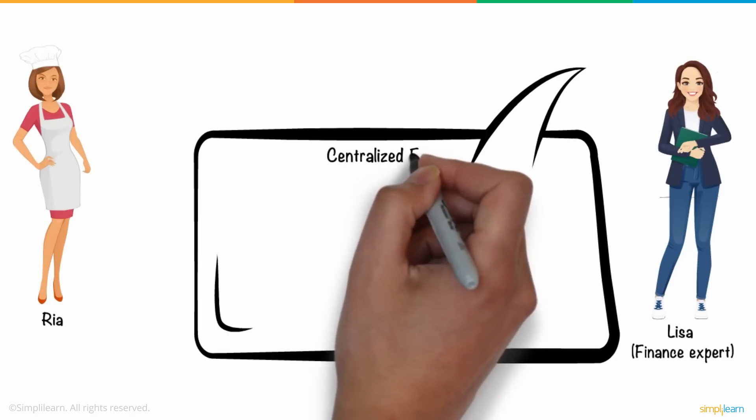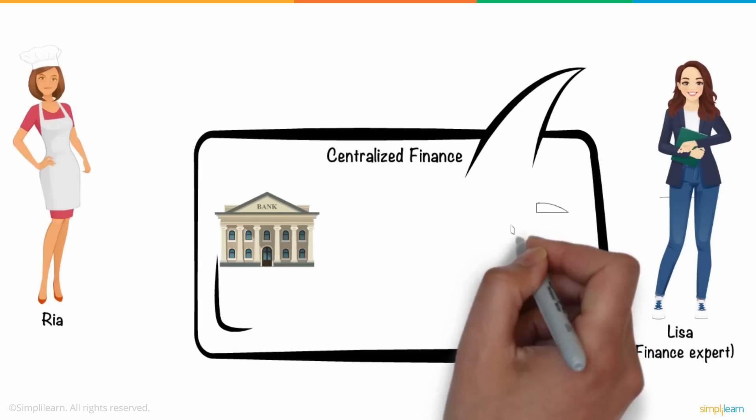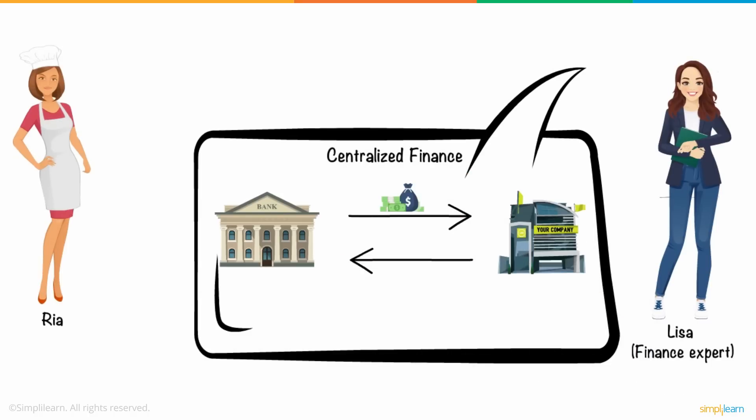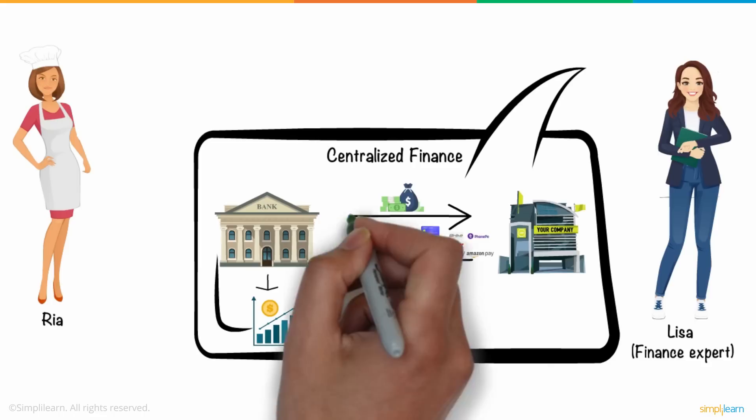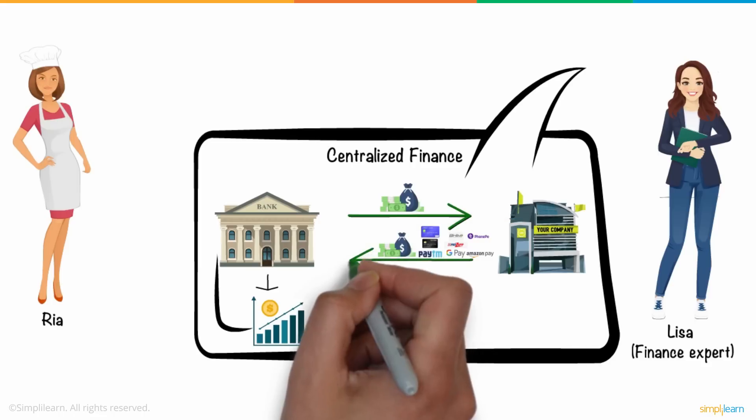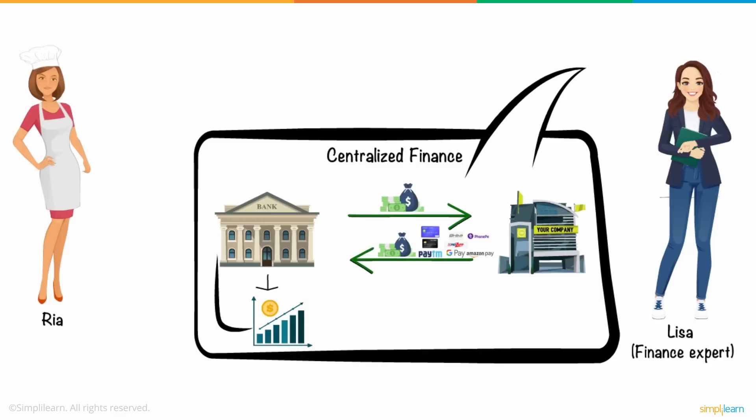Lisa explained to her that in centralized finance, banks and businesses use the money that you invest or lend to make profits, and their overriding objective is to make money. Third parties or merchants like debit credit card providers control money transfers between the two end parties in the financial system, each charging a fee for their services.